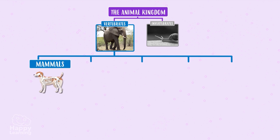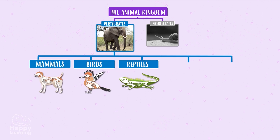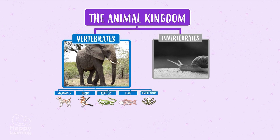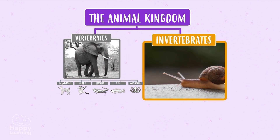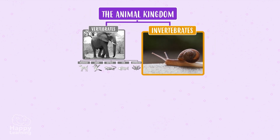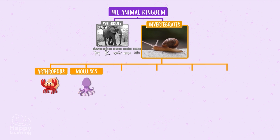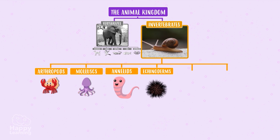Those five vertebrate groups are: mammals, birds, reptiles, fish, and amphibians. Invertebrate animals have no internal skeleton, no bones, and are classified into six groups: arthropods, mollusks, annelids, echinoderms, sponges, and cnidarians.